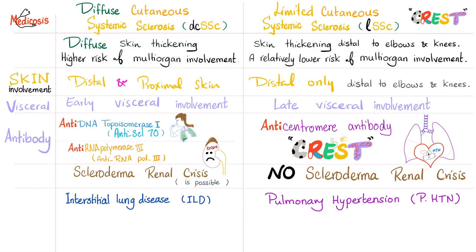In a nutshell: diffuse is all over the place; limited is more limited. Diffuse is more likely to affect the viscera, and earlier. Diffuse affects the skin distally and proximally; limited is distal to the elbows and knees. Antibodies in diffuse include anti-scleroderma 70 and anti-RNA polymerase 3. CREST syndrome has the anti-centromere antibody. Diffuse tends to cause scleroderma renal crisis — a true emergency that can lead to malignant hypertension, hypertensive encephalopathy, and end-organ damage. It can also cause interstitial lung disease.